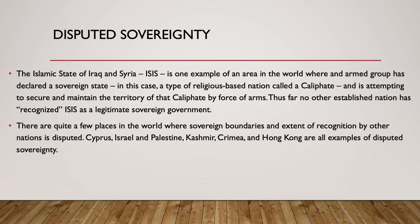So here are some examples. Right now, ISIS — the Islamic State of Iraq and Syria — is one example of an area in the world where an armed group has declared a sovereign state. They've actually declared a caliphate, and they're attempting to secure and maintain that caliphate by force of arms. Thus far, as far as I know, no other established nation has recognized ISIS as the legitimate sovereign government of that area.